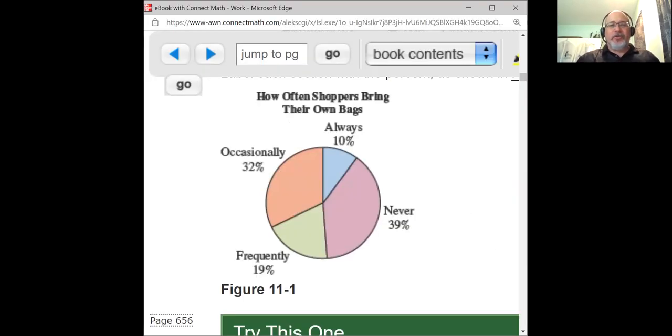This is from the textbook that we're currently using. The textbook is Mathematics in Our World by Sabecki, published by McGraw-Hill, 12th edition. This pie chart shows us what percent of shoppers bring their own bags a certain amount of time. 10% of the shoppers surveyed said they always bring their own bags. 39% say they never bring their own bags. 19% say frequently and 32% say occasionally.